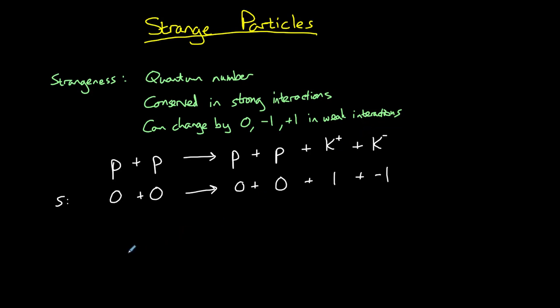For example, a negative kaon particle decays into a muon plus an anti-mu neutrino. In terms of strangeness, a kaon has a strangeness of minus one, a muon has a strangeness of zero and an anti-mu neutrino also has a strangeness of zero.